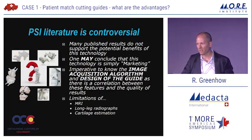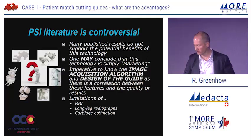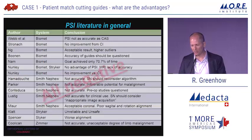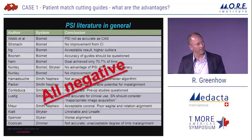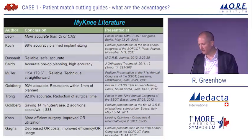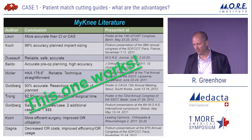Many systems rely on some combination of MRI and/or long-leg radiographs or cartilage estimation. So, PSI literature in general has been negative, but MINI literature has generally been very favorable.